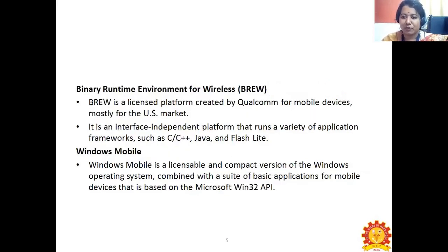Java ME is by far the most predominant software platform of any kind in the mobile ecosystem. It is a licensed subset of the Java platform and provides a collection of Java APIs for the development of software for resource-constrained devices such as phones. Binary Runtime Environment for Wireless, which is BREW, is a licensed platform created by Qualcomm for mobile devices, mostly for the US market. It is an interface-independent platform that runs a variety of application frameworks such as C, C++, Java, and Flashlight. Windows Mobile is a licensable and compact version of a Windows operating system combined with a suite of basic applications for mobile devices, based on the Microsoft Win32 APIs.